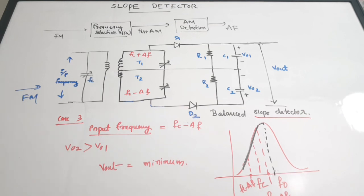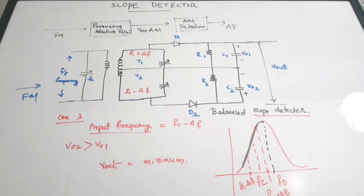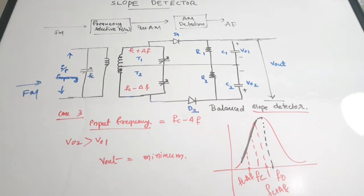We have seen the basic slope detector and the balanced slope detector. The balanced slope detector is a more advanced version, but the working principle is the same for both circuits. In this video we discussed slope detectors, which can be used for recovery or detection of FM waves. The principle is: take an FM wave as input, pass it through a frequency selective network to produce an FM plus AM modulated wave, then perform AM detection to recover the information or modulating signal. I hope you understood the concept of slope detectors — it is a very important topic. If you found the video useful, please give it a thumbs up, share with your friends, and subscribe to the channel.